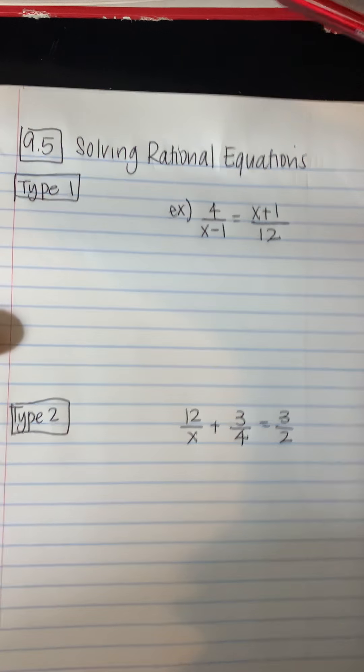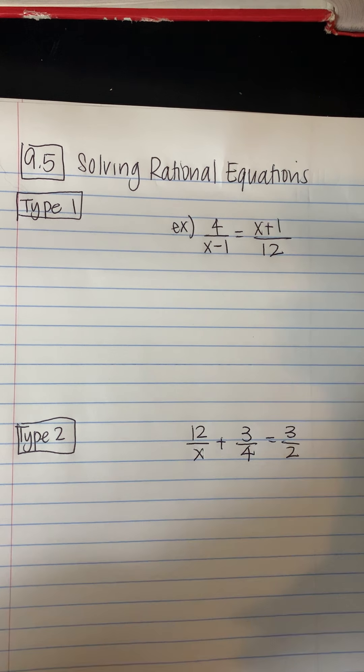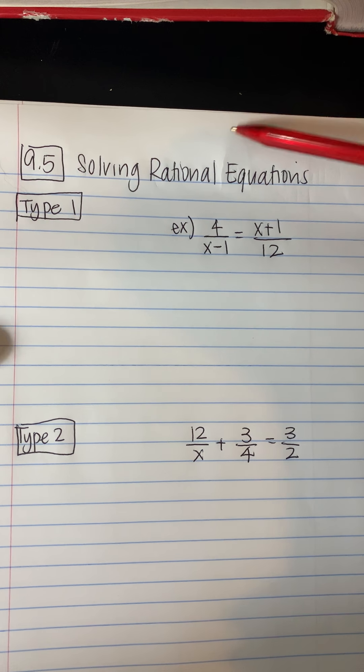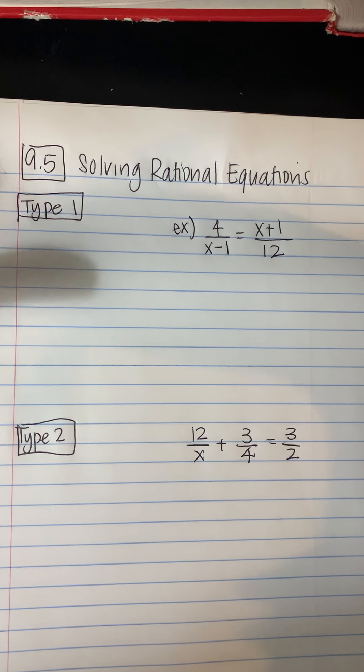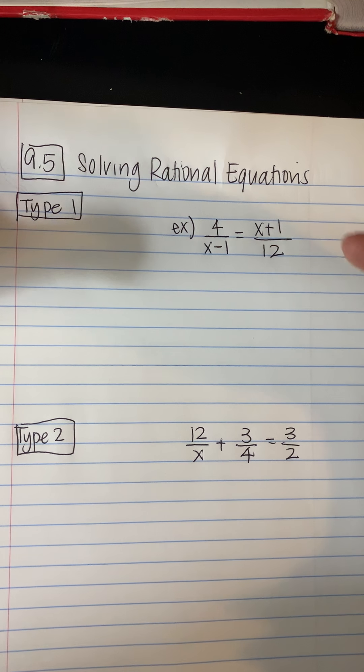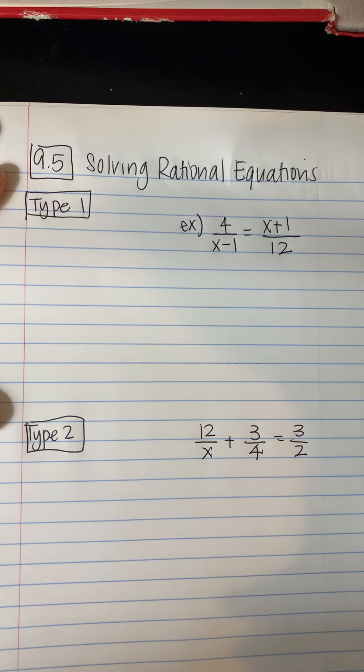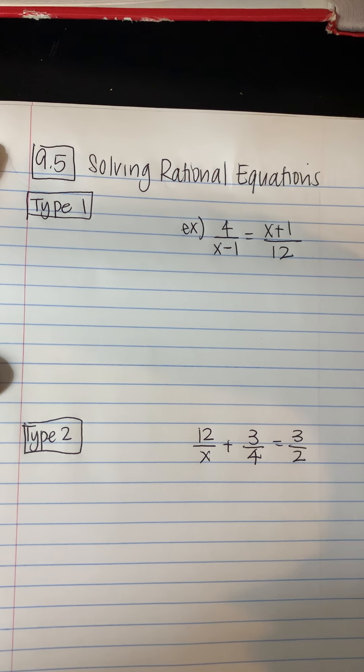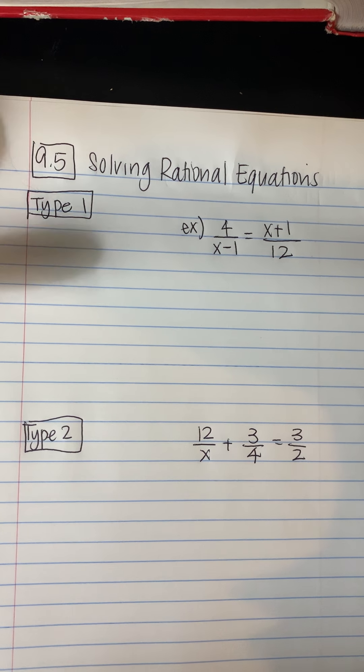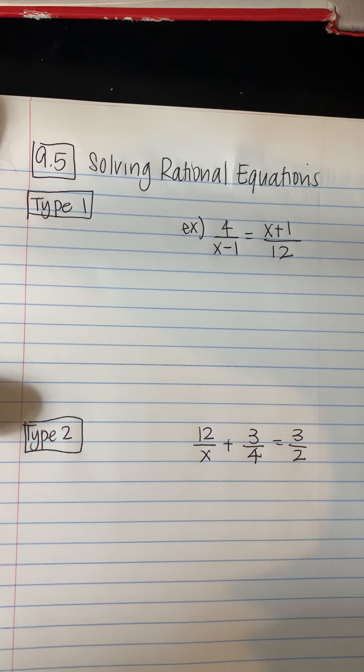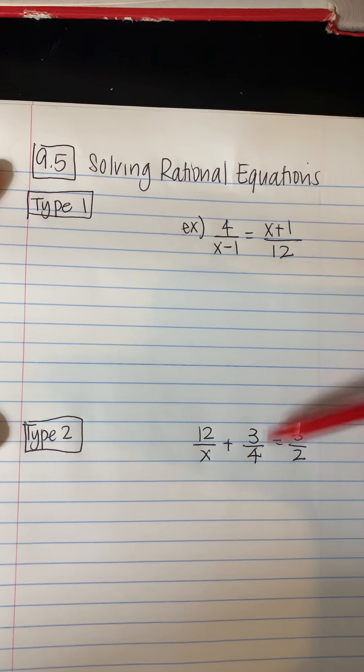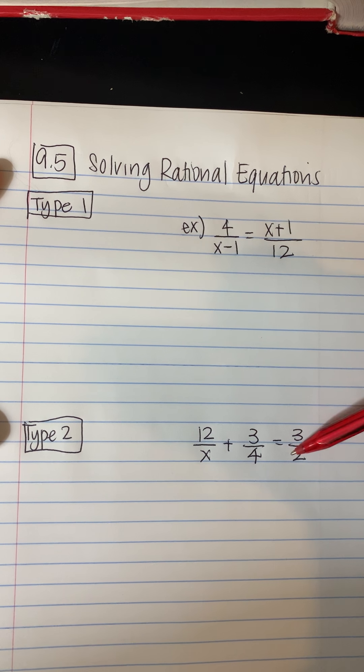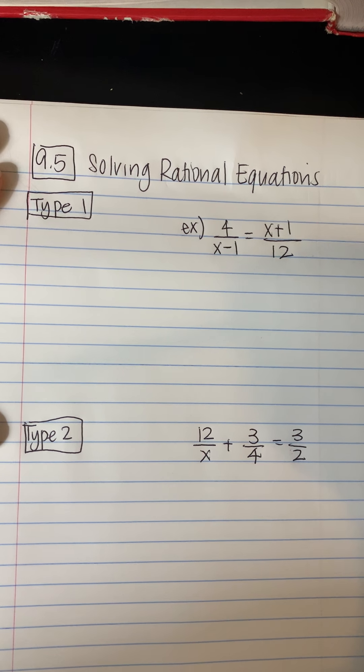We're going to talk about section 9-5, Solving Rational Equations today. I did hear you guys about wanting these typed out and I will try to get that for next chapter. I'm still just trying to get my feet wet with everything. This actually is going to be our last section we're going to do out of chapter 9, and we'll review for a few days and then we will try to test online. We're going to learn two different types of problems today and we'll probably do another example of type 2 because that's a little bit trickier.